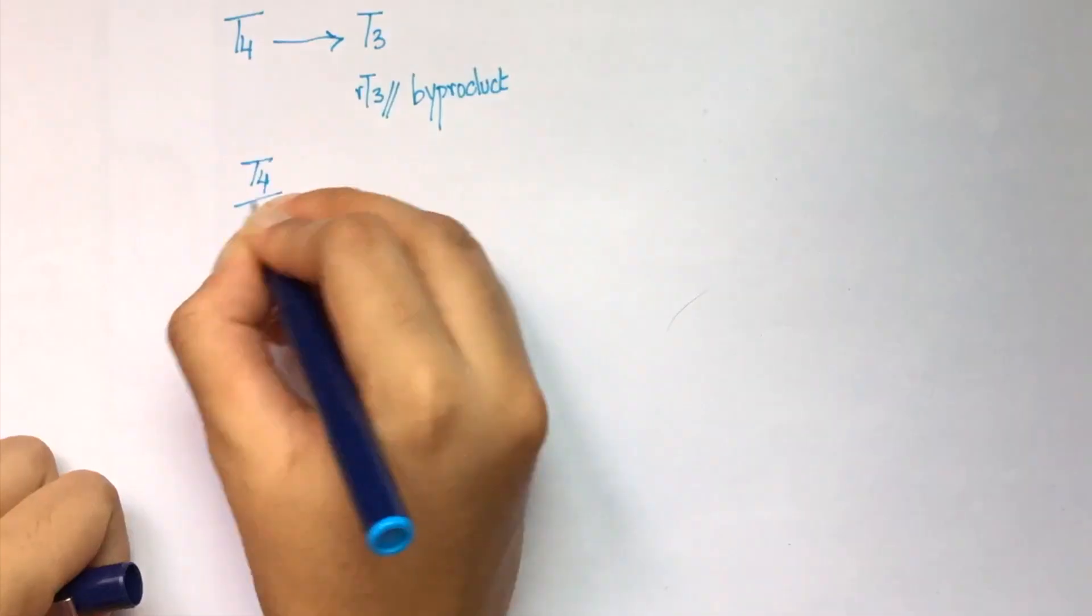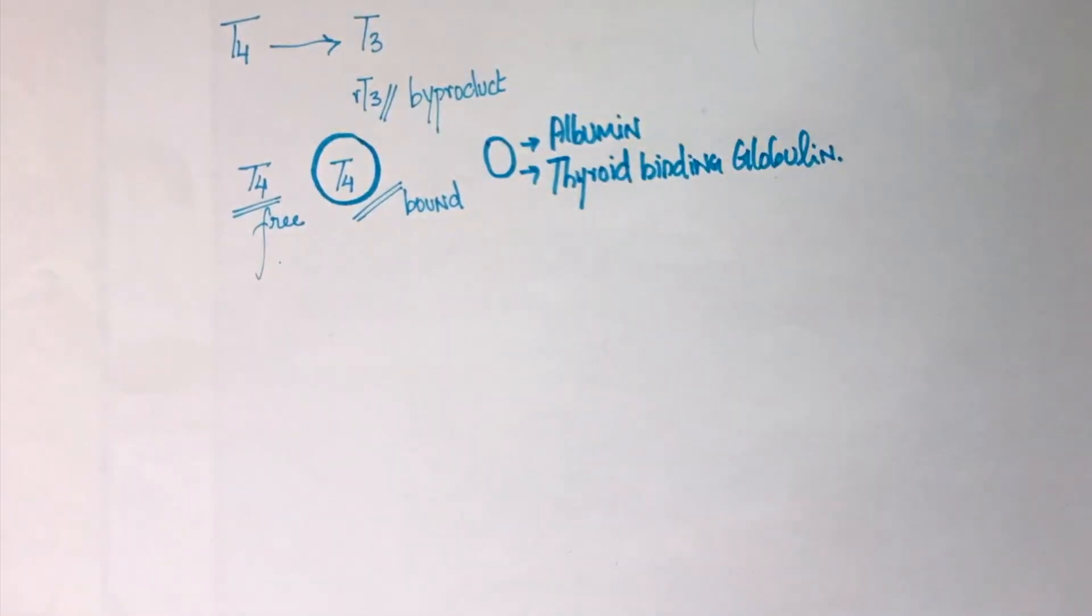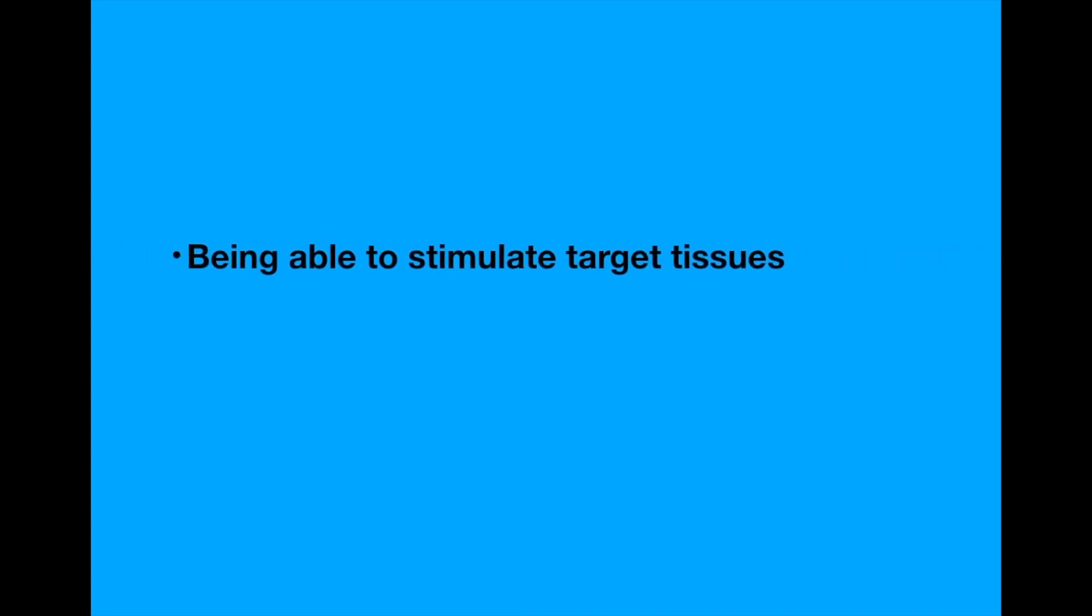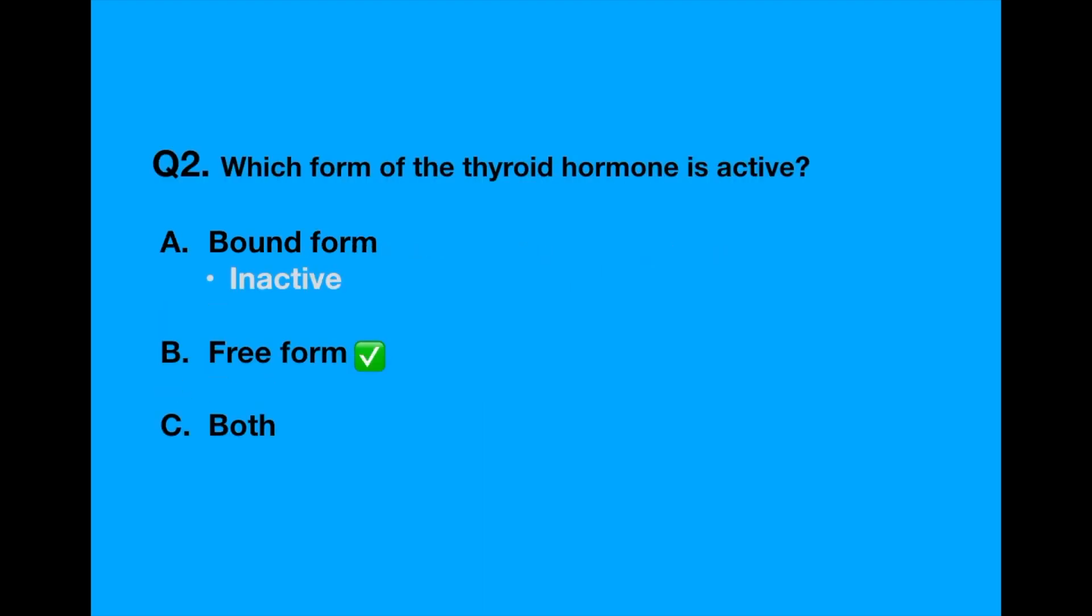The thyroid hormone is bound to proteins like albumin and thyroid binding globulin. The bound form is not active. It is only the free form that is active. And by active, I mean being able to stimulate target tissues as well as being able to contribute to negative feedback. I have mentioned them in detail in my previous video. The significance of this will be discussed in question number four.